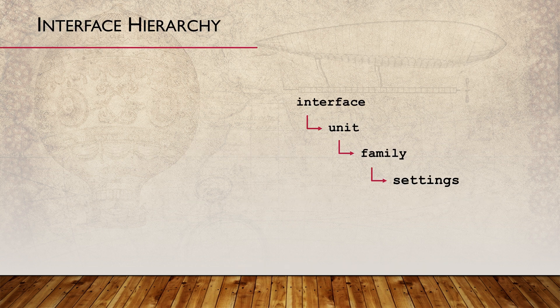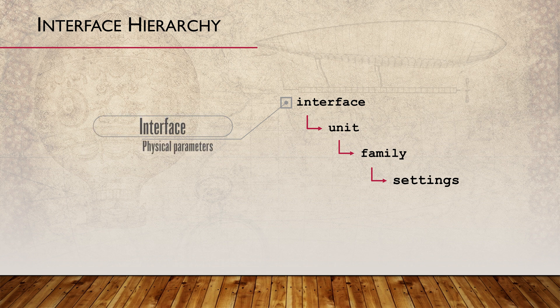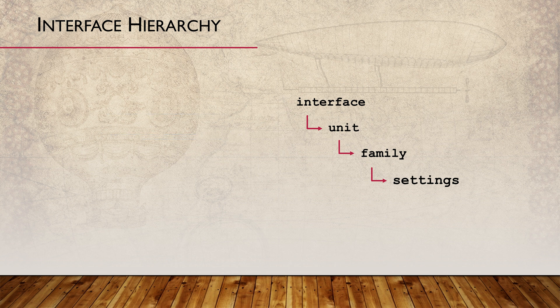Let's look at interface configuration. Everything is hierarchical in Junos, and interfaces are no exception. First, we have the interface itself. If the interface we're configuring is physical, this is where we configure physical parameters, including duplex settings, link speed, MTU, and so on.